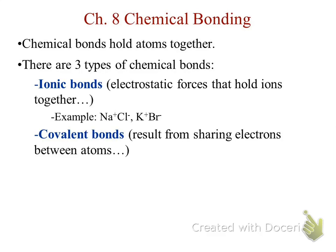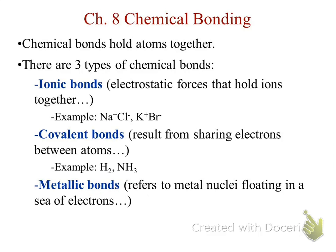Second, covalent, which we talk about in detail, where we're going to share electrons. All of these are going to take place from the valence electrons. And also metallic bonds, which we're going to look at for the first time — the nuclei are sort of floating in a sea of electrons, and we'll explain that in just a second.